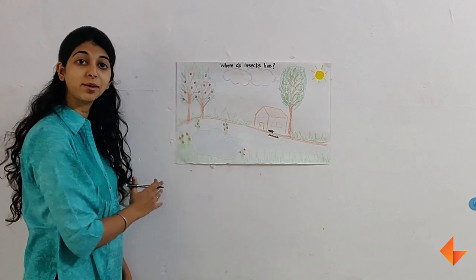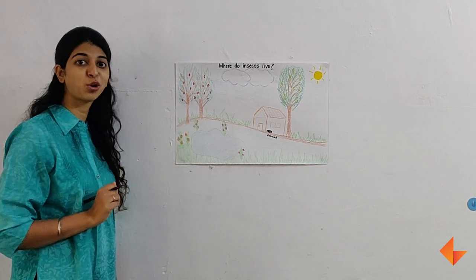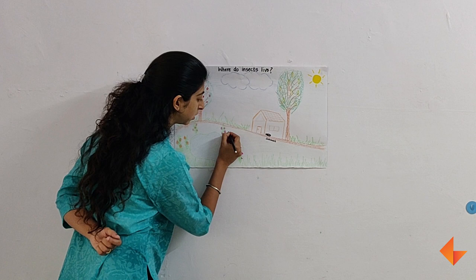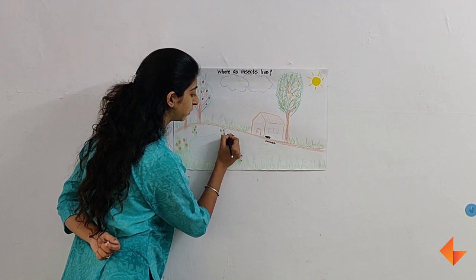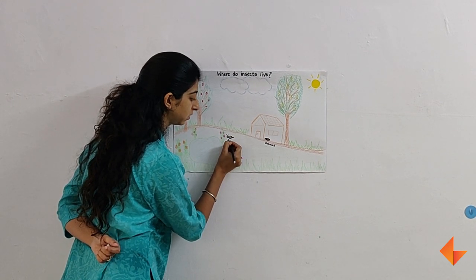Then ask them where do I put them in this picture? You can invite the child to come and show you where to draw the bee. So if the child says here near the flowers, quickly draw a picture of the bee near the flowers and label it.